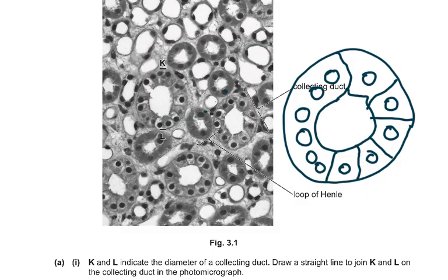Now drawing the diagram: the proportions must be correct. Looking at the collecting duct, count the nuclei: one, two, three, four, five, six, seven, eight, nine, ten, eleven — so eleven nuclei. You have to draw exactly what you can see. A diagram like this is fine. Remember there is no shading; you just draw simply what you can see. This is the collecting duct.